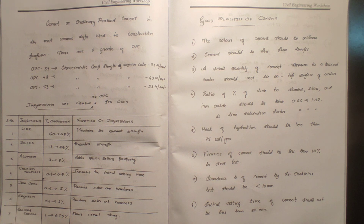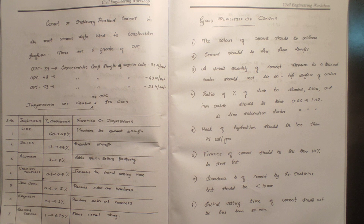OPC stands for: O for Ordinary, P for Portland, and C for Cement. OPC 33 means its characteristic compressive strength is 33 N/mm² (33 MPa), tested using a standard mortar cube.